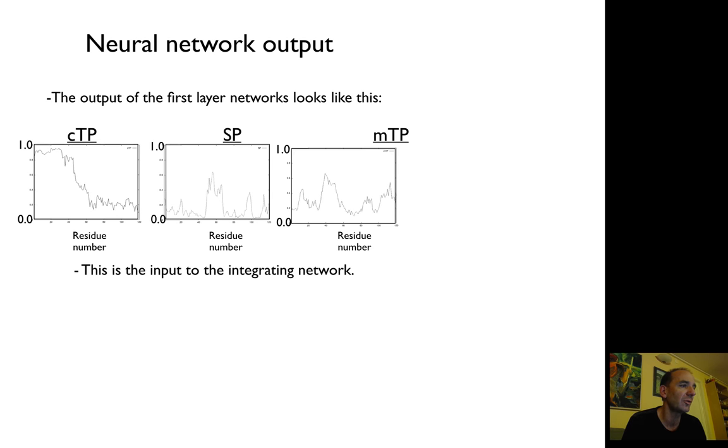The first network is basically using a sliding window, as I described earlier. You develop three sliding windows that are trained to predict if they're in the cytoplasm or not, or in the chloroplast.